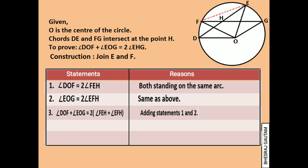Now in triangle EFH, angle EHG is the exterior angle, which should be equal to the sum of the opposite interior angles, angle FEH and angle EFH.